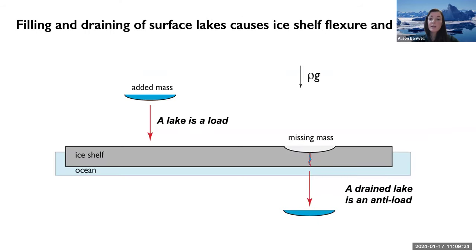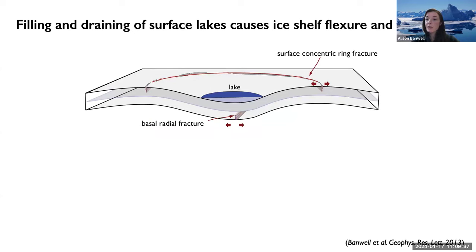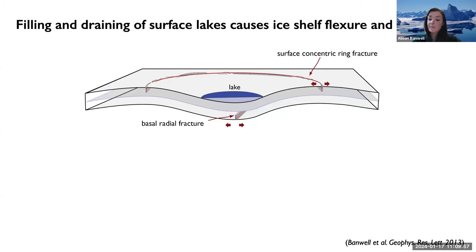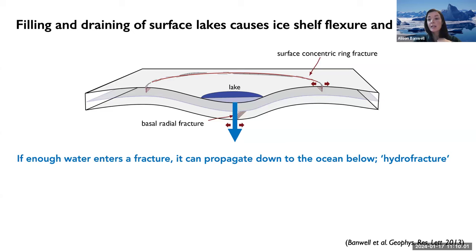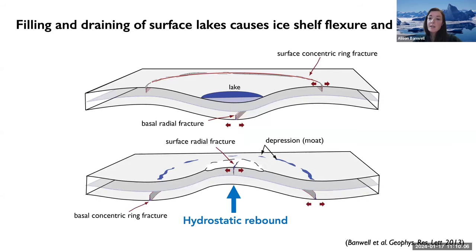Our research built on hydrofracture by also considering how surface lakes can act as a load when full or an anti-load when they drain. Because ice shelves float on ocean water, the load of a lake can cause them to flex or bend. If this happens, a specific pattern of fractures forms: a surface ring fracture around the lake and basal radial fractures propagating out from under the lake's centre. If enough water enters the fracture, it can propagate to the ocean below. If the lake then drains, the ice shelf hydrostatically rebounds, producing the opposite fracture pattern.